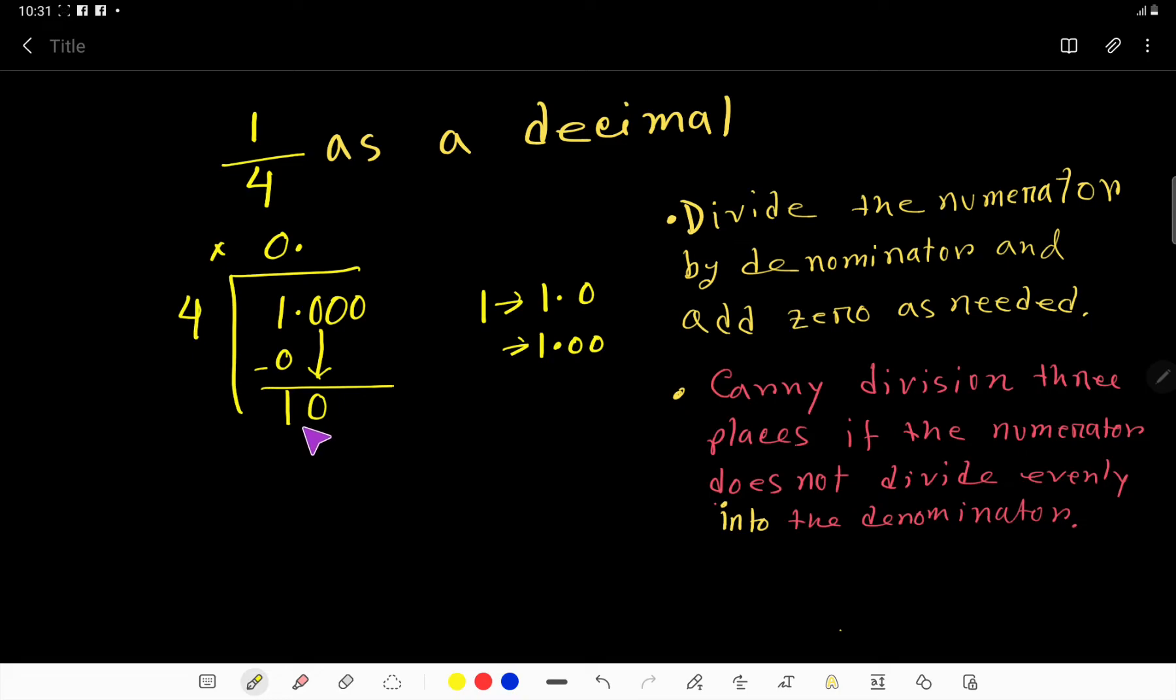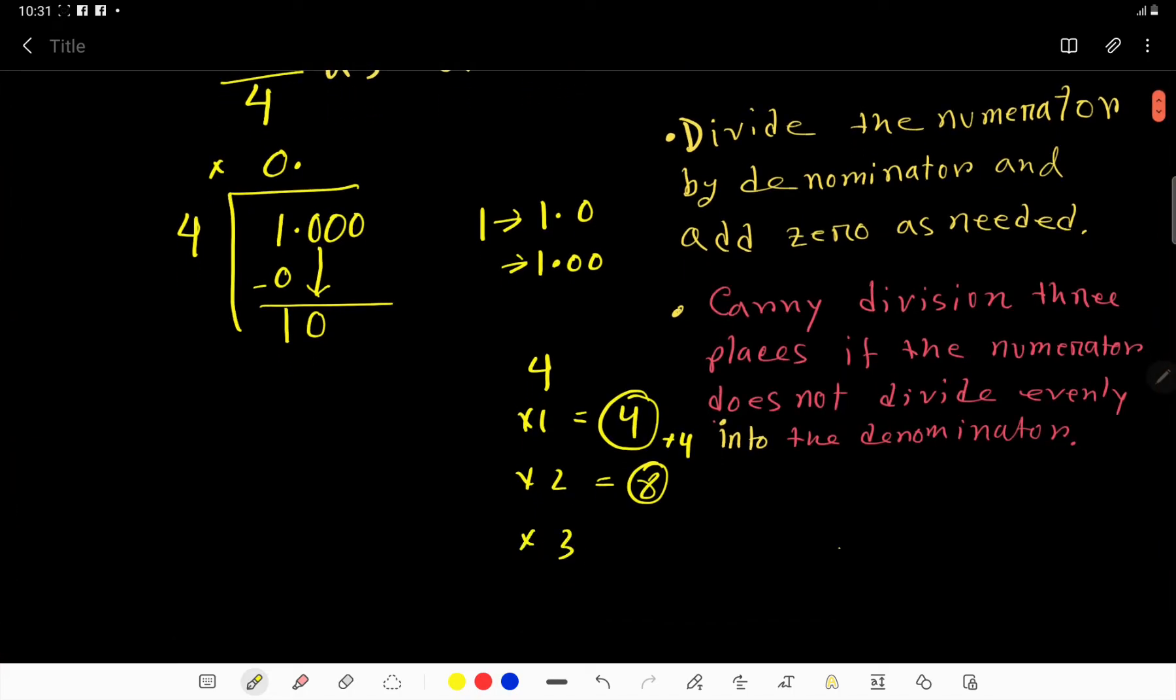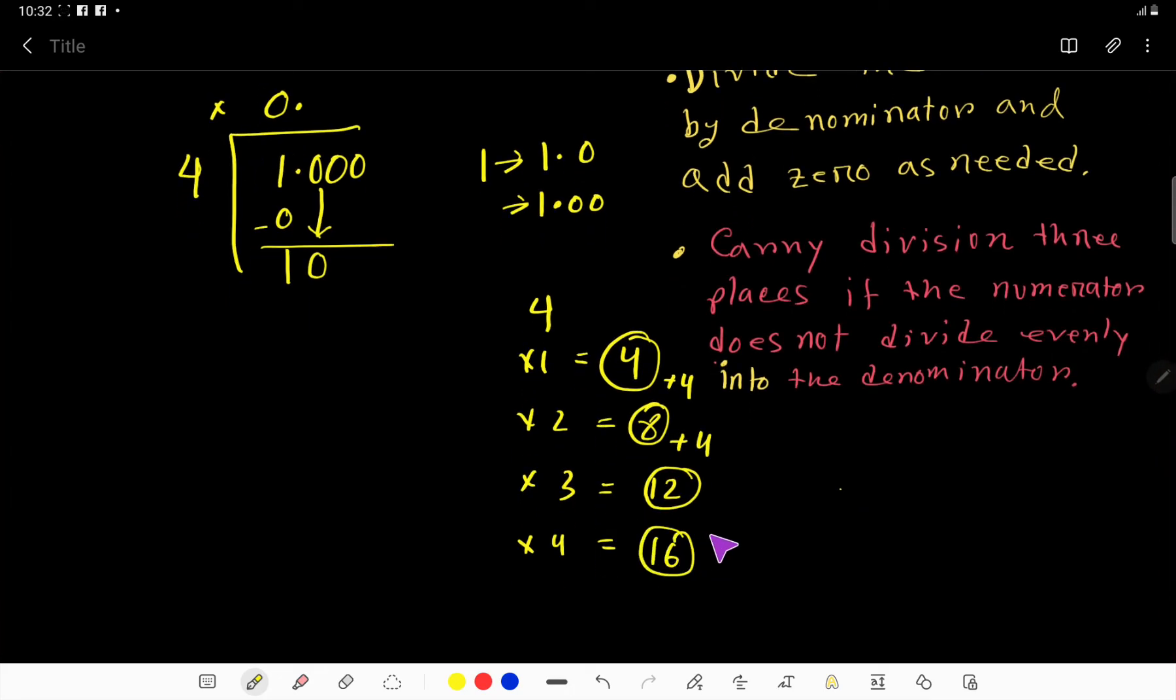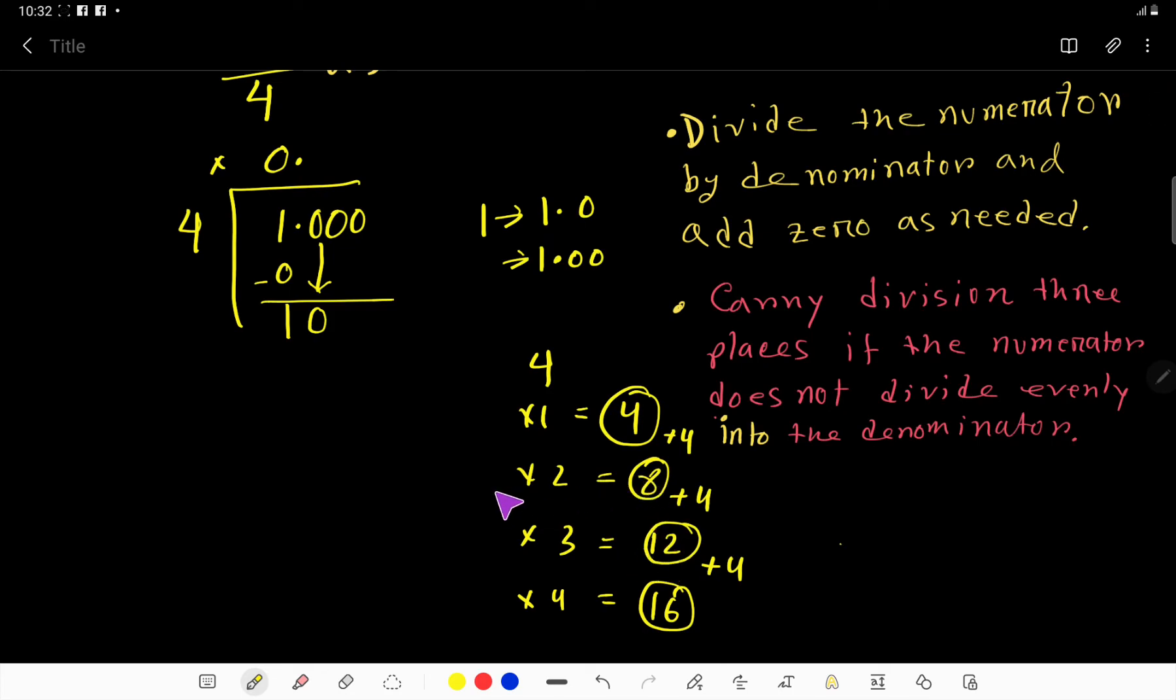So we have 10. 4 goes into 10 how many times? We need the multiplication table: 4 times 1 is 4, 4 times 2 is 8, 4 times 3 is 12, 4 times 4 is 16. We have 10, so we stop at 4 times 2 equals 8. 4 goes into 10 two times. 4 times 2 is 8. If you subtract, you get 2. Now bring down this 0.